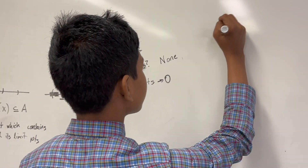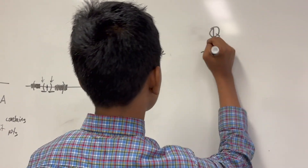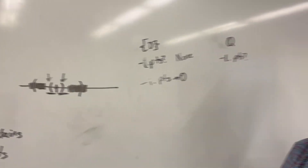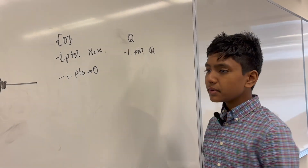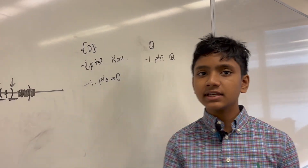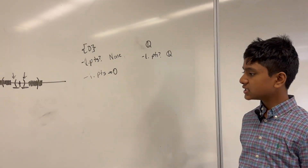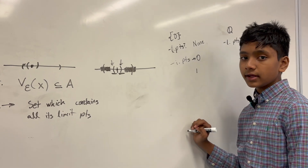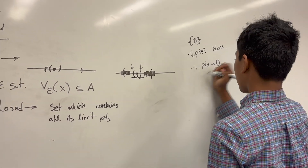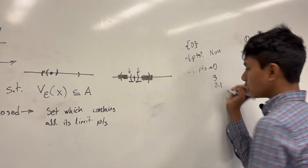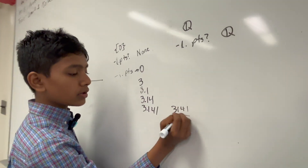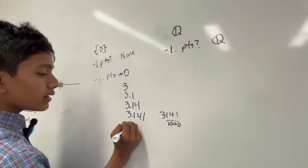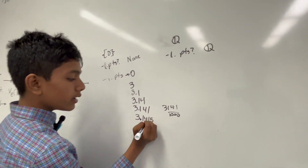What about a different set, like the rational numbers? What are the limit points? Well, you might expect it to just be Q itself. However, think about this: a limit point is essentially the limit of a sequence which can be formed using the elements of our set. So one is rational, right? What about 3.1? What about 3.14? What about 3.141? Still rational — 3.141 over 1,000. How about 3.1415? That's 3.1415 over 10,000.